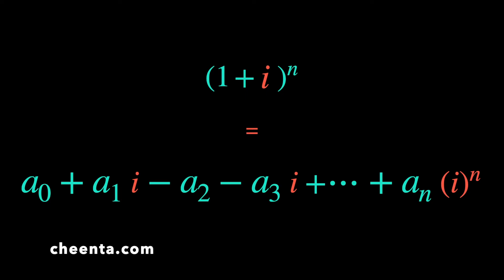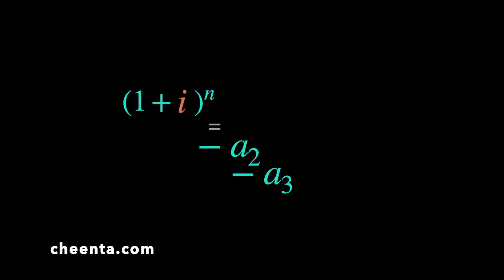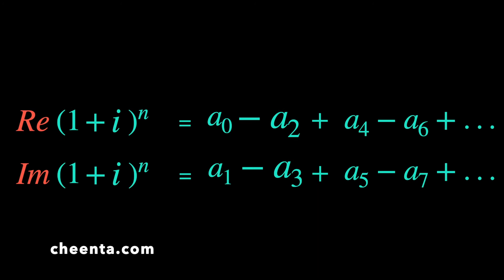The real part is everything without i, and the imaginary part is everything with i. So the real part is a₀ − a₂ + a₄ − a₆ + …, and the imaginary part is a₁ − a₃ + a₅ − a₇ + …